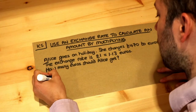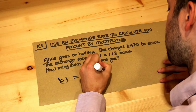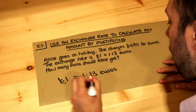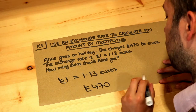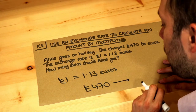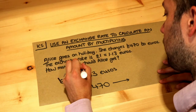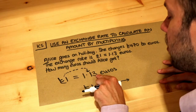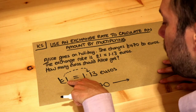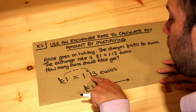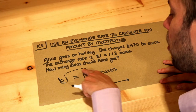Let's write out this exchange rate bigger so I can annotate it. We have an amount of 470 pounds and we want to change it to euros. In the exchange rate we're going from pounds to euros — now what is happening to get from that 1 to the 1.13?